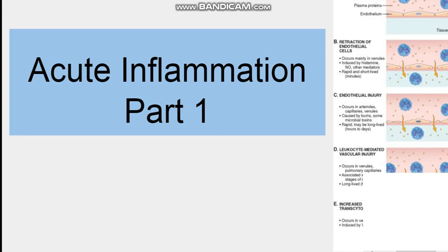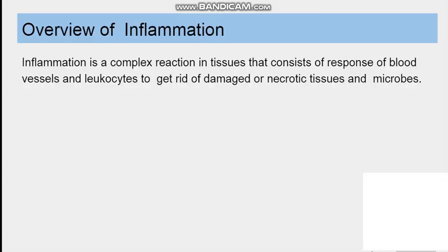Hello everyone. In this video we will discuss about inflammation. We will mainly discuss about acute inflammation in this video. Inflammation is a complex reaction which takes place in the body in order to get rid of any damage, necrotic tissue, or microbial infection. It consists of a response of blood vessels and WBCs to eliminate any necrotic tissue or microbial infection in the body.